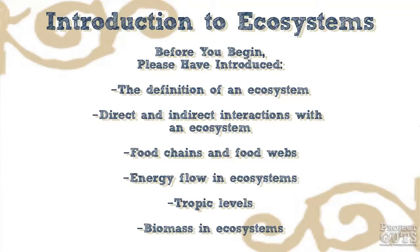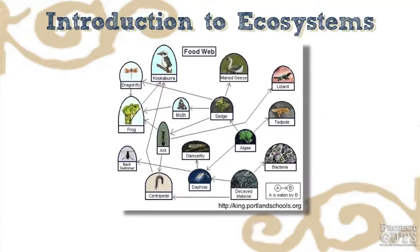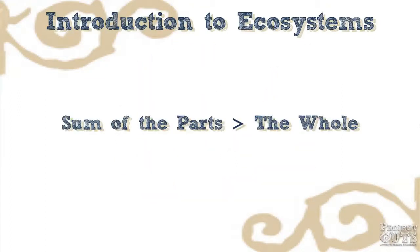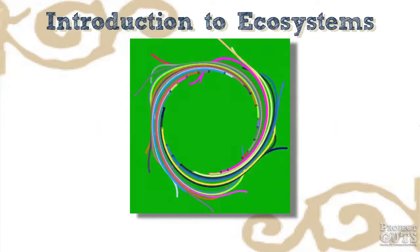What are the characteristics of complex adaptive systems that are seen in ecosystems? One characteristic is that the behavior of some aspects of the complex system, seen as a whole, doesn't necessarily follow directly from an understanding of how the individual parts of the system work. In other words, the sum of the parts is greater than the whole. We saw this in the turn and walk activity in Module 1.